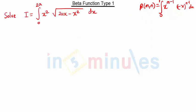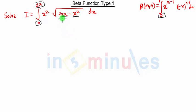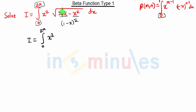So this is our question. In this question, if you see, we have integration limits from 0 to 2a, but we want integration limits from 0 to 1. Here we have 2ax minus x squared, so we have to make this term into 1 minus x the whole raised to something. So our I will be integration 0 to 2a of x squared into 2ax minus x squared the whole raised to half, into dx.